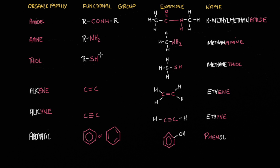Thiols have an SH functional group, and just like the previous two, the name 'thiol' is at the end of the molecule's name — so in this case we're dealing with methanethiol. Alkenes have a double bond between carbons; this example is called ethene, so the ending for alkenes is E-N-E. Alkynes, on the other hand, have a triple bond and have the ending Y-N-E.